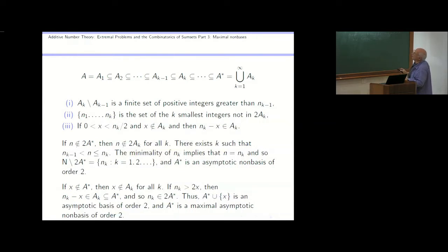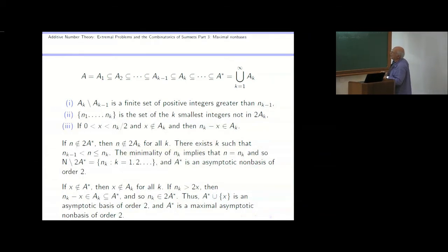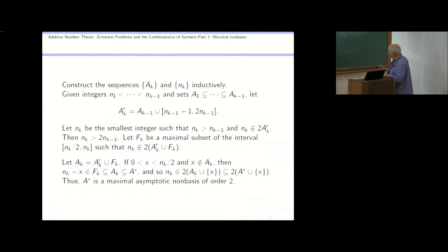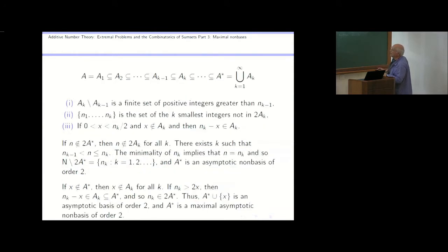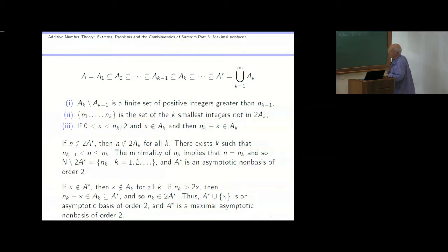Now, if you take any number X that's not in A*, then it's not in any of these sets A_k. If you take k large enough, N_k is going to be bigger than 2X. But if X isn't in A_k and N_k is bigger than 2X, then N_k minus X is in A_k, which is in A*. Which means if you add X to A*, you can represent N_k as X plus (N_k minus X). So if you join element X to A*, you get every sufficiently large number that had been missing from 2A*. So A* is the maximal asymptotic non-basis.